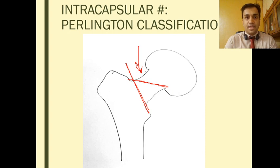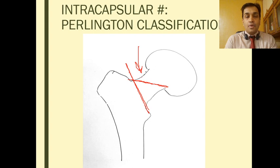Another difference between Garden classification and Pauwels classification: Garden classification can be applied in the emergency room when the patient is in front of you, whereas Pauwels and Perlington are classifications applied in the operation theater.